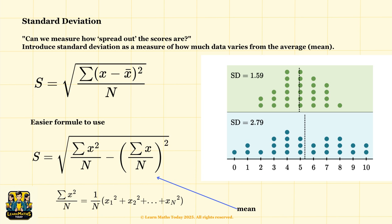Look at this image here. There are two groups of dots, one in green and one in blue. Both have the same center, but they look different. The green group is more tightly packed with a standard deviation of 1.59, meaning the data points are closer to the center. The blue group is more spread out with a standard deviation of 2.79, meaning more variation.